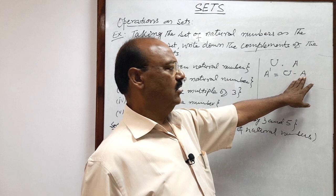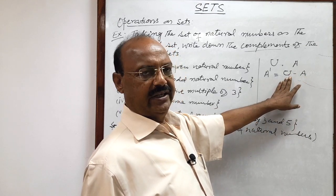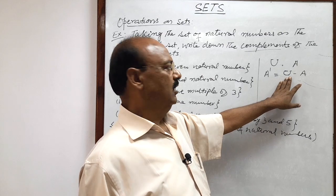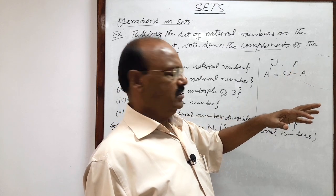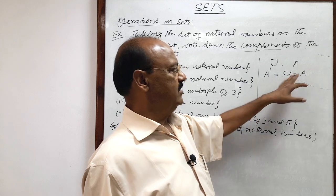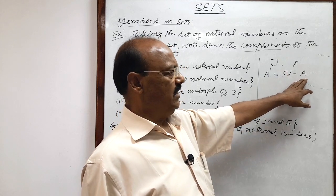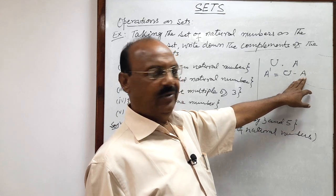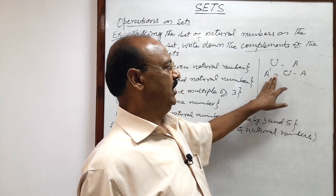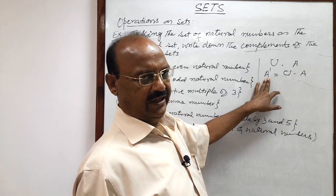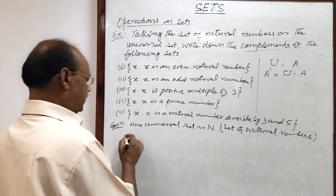When all the elements of set A have been removed from the universal set — which is the superset — the remaining elements form the complement of set A. This question is very interesting and simple, so let us discuss it.